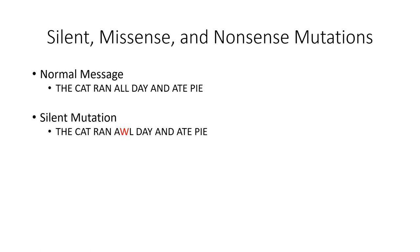Silent mutations are those that alter the genetic code with no overall effect on protein structure. Examples would be base substitutions that alter one codon to one that codes for the same amino acid, or to an amino acid with a near-identical chemical property. In the example here, a base substitution results in a small typo that doesn't affect the pronunciation of the word, and so doesn't affect the overall meaning of the sentence.